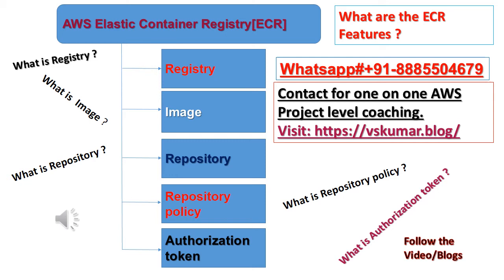10. What is Repository Policy? You can control access to your repositories and the images within them with repository policies. For more information, see Repository Policies. What is Authorization Token? Your client must authenticate to Amazon ECR registries as an AWS user before it can push and pull images. For more information, see Private Registry Authentication.